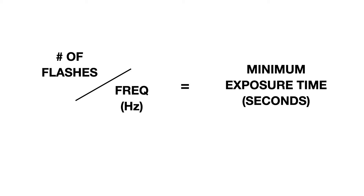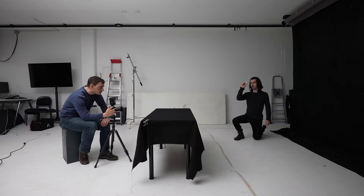So rather than getting tangled up in calculations, let's put this to use and start working on an actual shot. To find out your minimum shutter speed needed, simply divide the number of times you want the flash to go off by the hertz setting, and the resulting number is how many seconds you need to open the camera for — minimum — in order to make your shot.